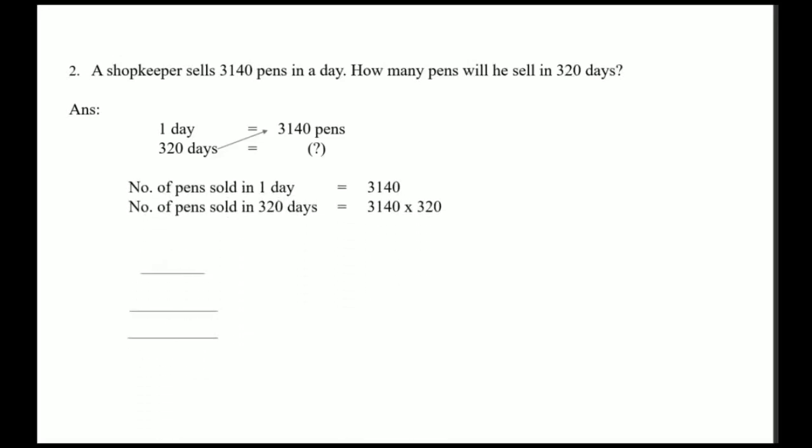First write the statement: number of pens sold in one day = 3140. Number of pens sold in 320 days = 3140 multiplied by 320. An easy method here is to ignore the zeros at the end, multiply 314 by 32, and then add the two zeros at the end of your answer.